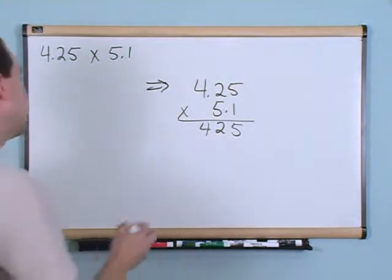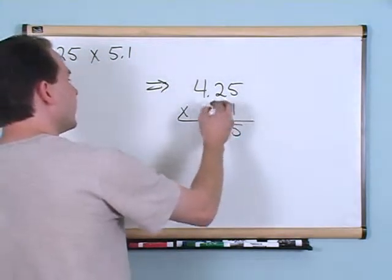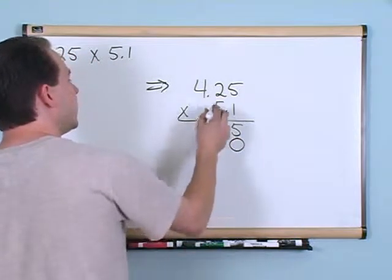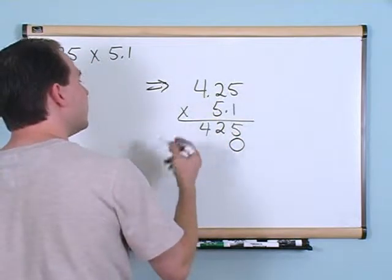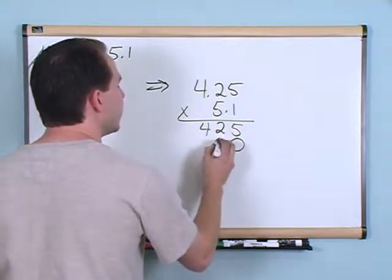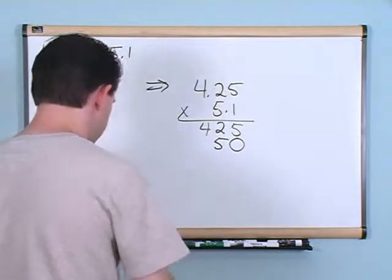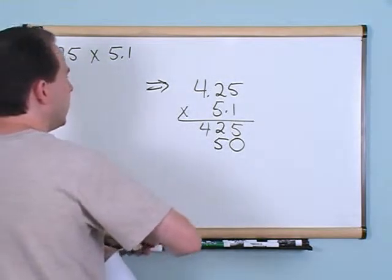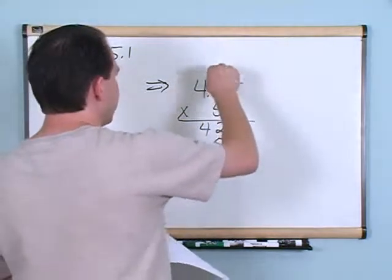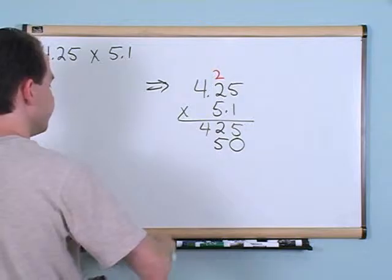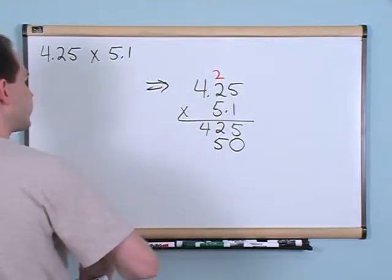So let's go ahead and multiply. 1 times 5 is 5. 1 times 2 is 2. 1 times 4 is 4. So far not too bad. Now let's move to the other column — because I'm moving to the next digit, I'll put a 0 here.